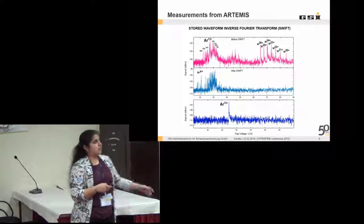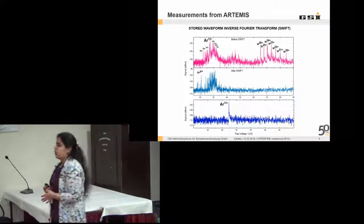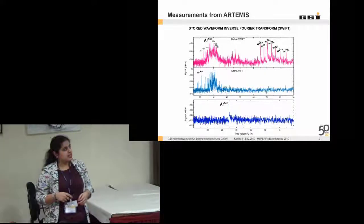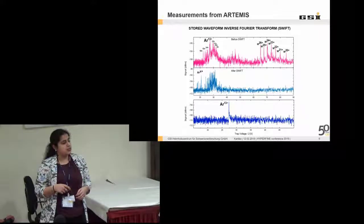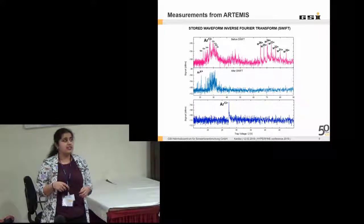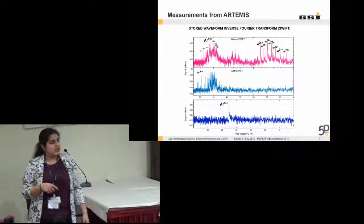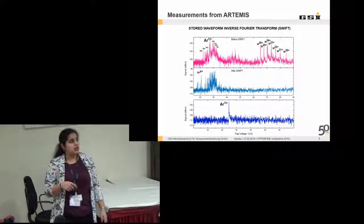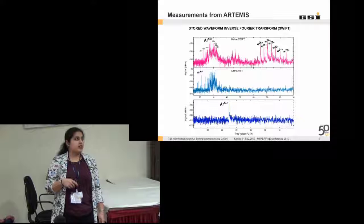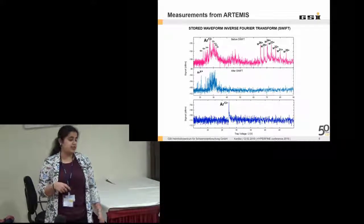Coming to the measurements. This is one of the measurements that we have up to now for the creation trap of the Artemis experiment. We have different peaks corresponding to different charge states. We have also some of the tungsten ions available. We use the SWIFT technique to remove the unwanted ion species in the first go. Then further to select a particular charge state, we again apply the SWIFT technique.